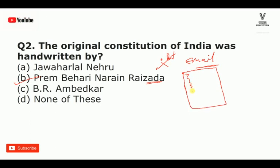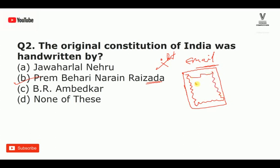The Constitution had borders designed with more pointed artwork. In the Preamble, there were borders on the sides. The text begins with 'We the People of India'.